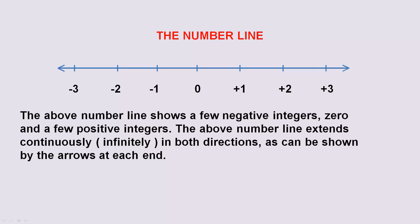The number line. The above number line shows a few negative integers, zero and a few positive integers. The above number line extends continuously, that is infinitely, in both directions, as can be shown by the arrows at each end.